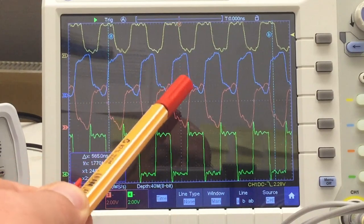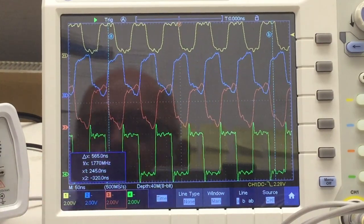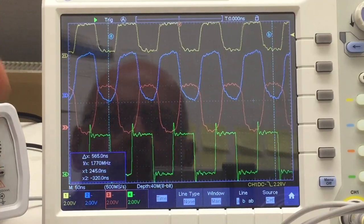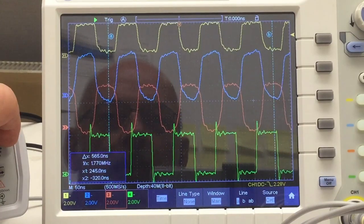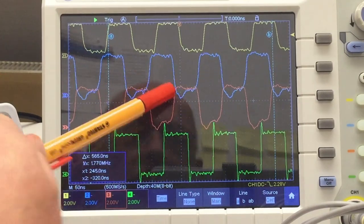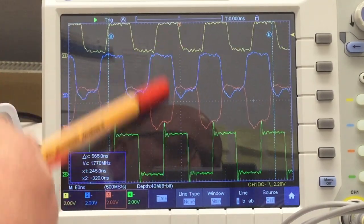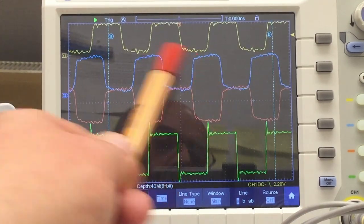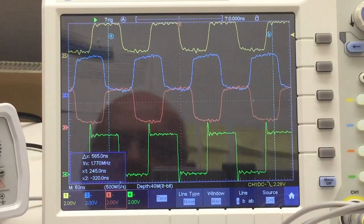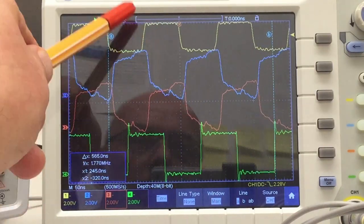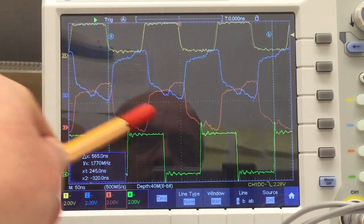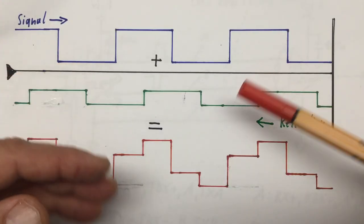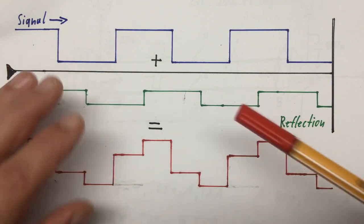But what happens if we change the frequency a little bit? That's nine megahertz now and here you see these funny distortions. Let's go down to eight megahertz, this looks, at seven megahertz almost good again. At six megahertz we have a distortion here. At five megahertz, half of 10 megahertz, it's absolutely perfect again. Four megahertz, these additional humps. What's going on here?